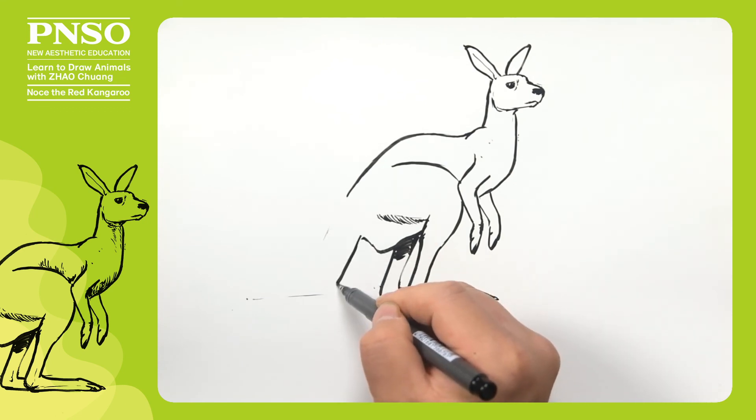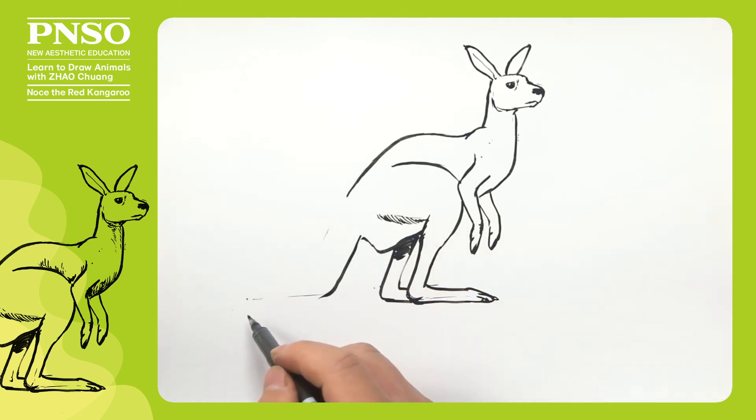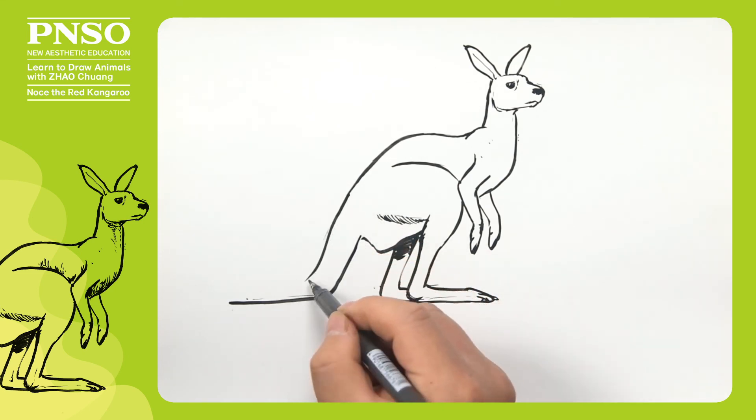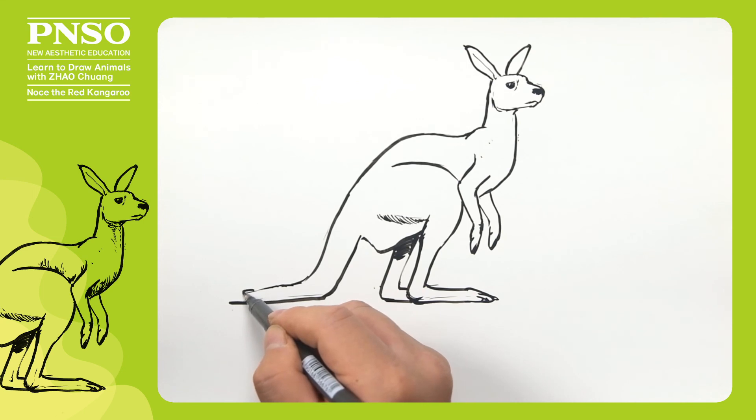Next, let's draw its strong tail, which looks like a stool on the ground. Then let's draw some fur on its tail.